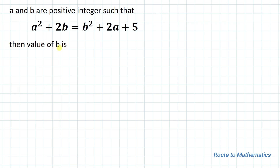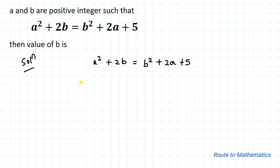So we have given a² + 2ab = b² + 2a + 5. In the next step, let's take all the 'a' terms to the left hand side and all the 'b' terms to the right hand side. So we have a² - 2a = b² - 2b + 5.